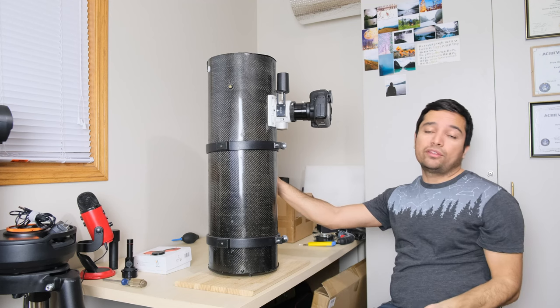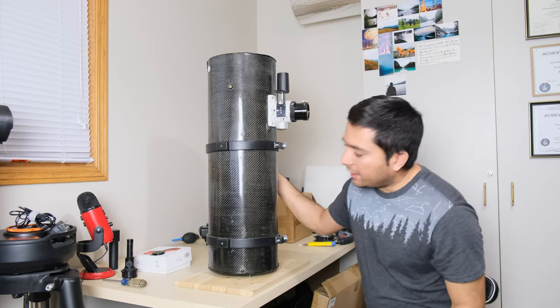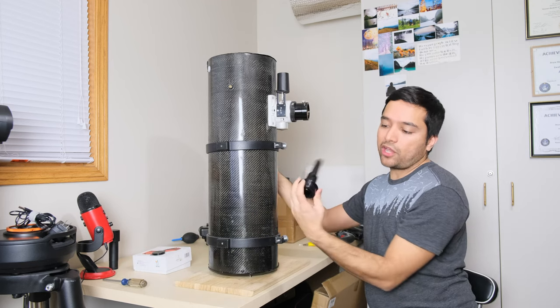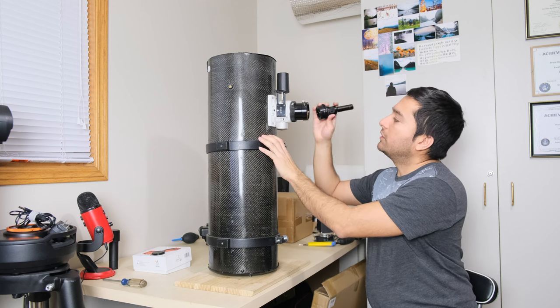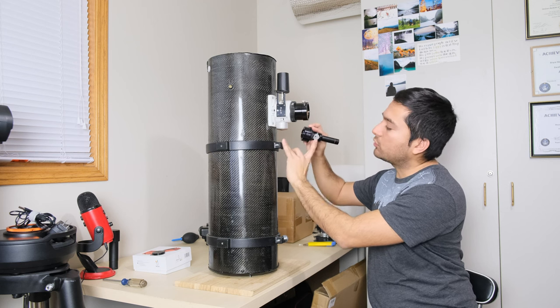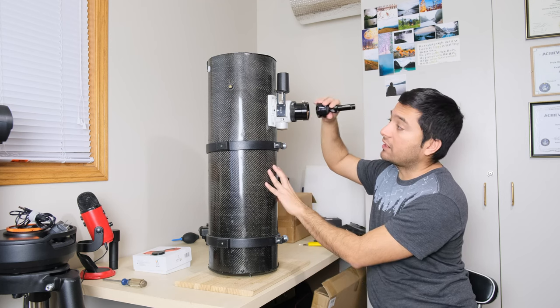I'm going to show you how to collimate a Newtonian reflector telescope using a laser collimator. I'm going to take my laser collimator, which has a two-inch adapter, and put this into the telescope facing downwards, with the open wide area facing downwards towards the back of the telescope.